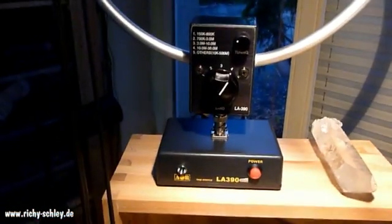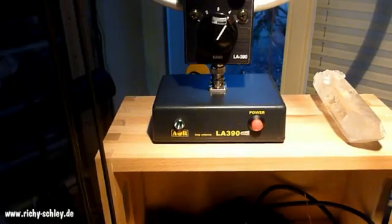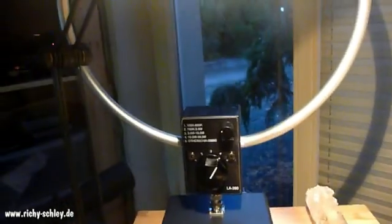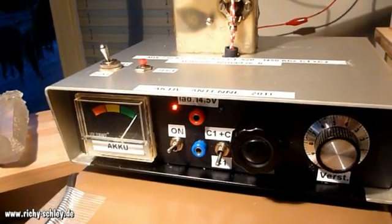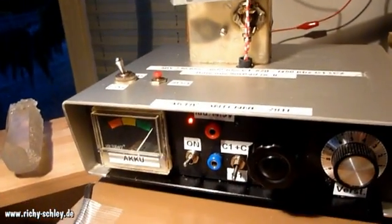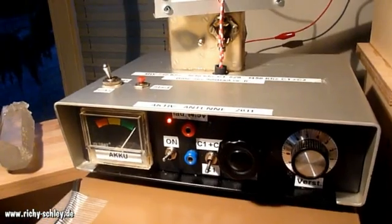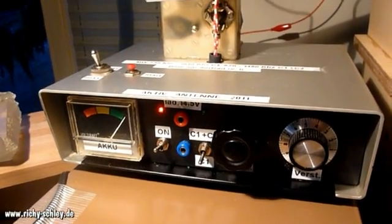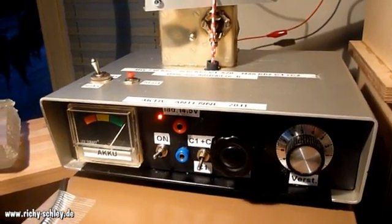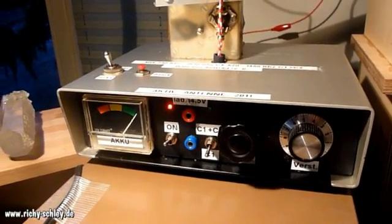I compared it with the AOR LA 390, which is also an active loop antenna, and they are quite the same. But when you have a very weak signal, the self-made, the homemade antenna is a little bit better. So you hear more details, you can understand the speaking a little bit better to identify the station.